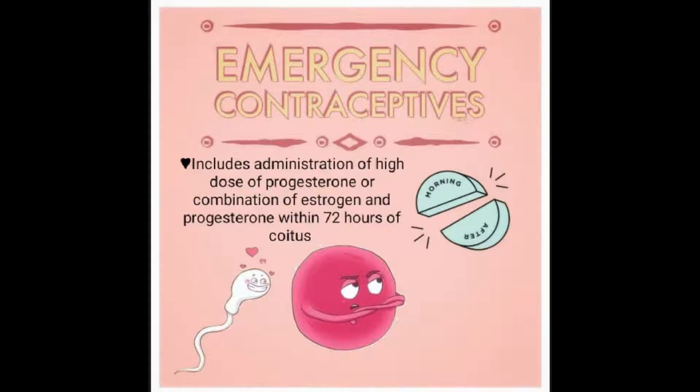The emergency contraceptive is a pill that is a high dose of progesterone or progesterone-estrogen combination, and it should be taken within 72 hours of coitus.